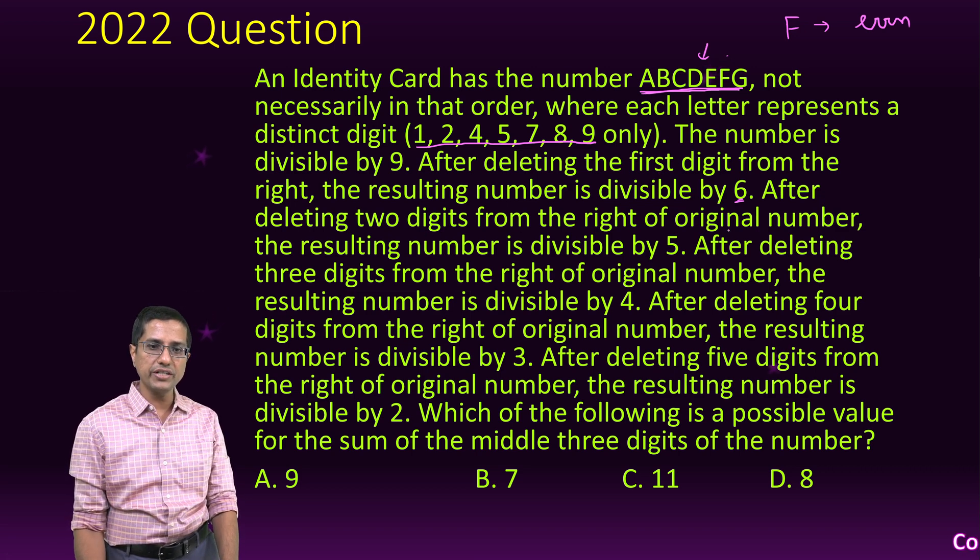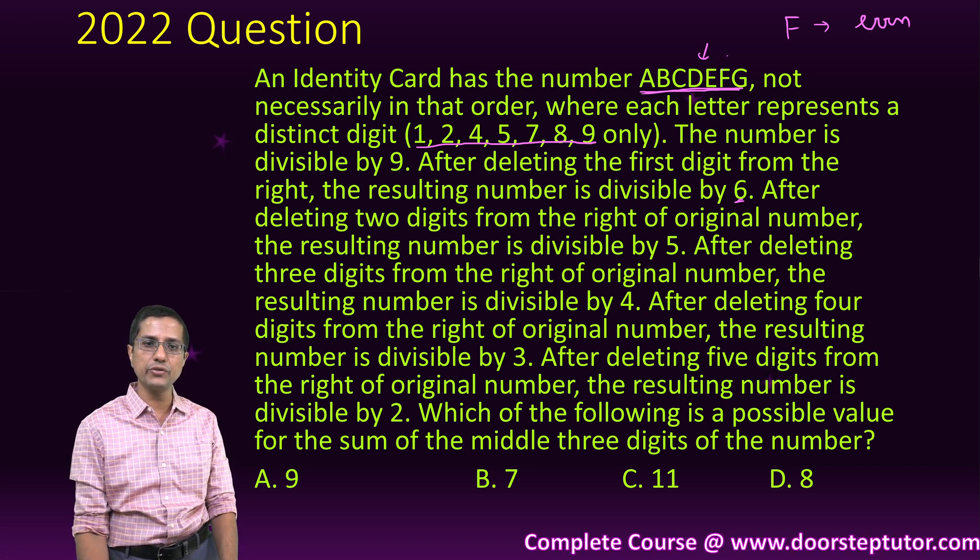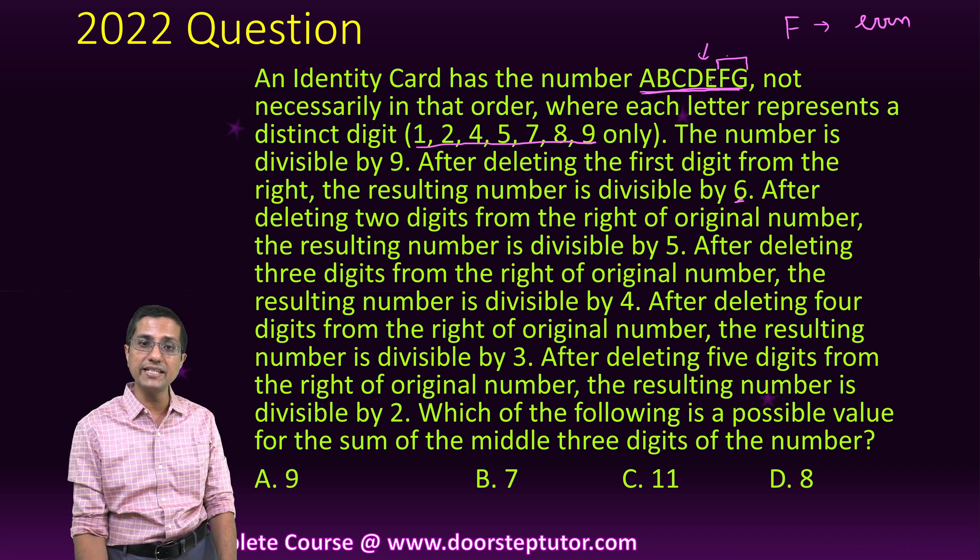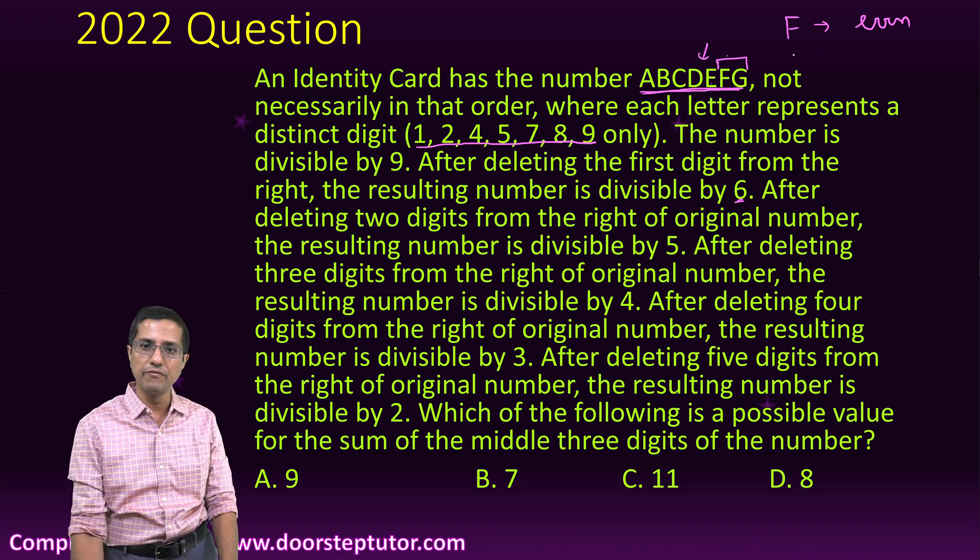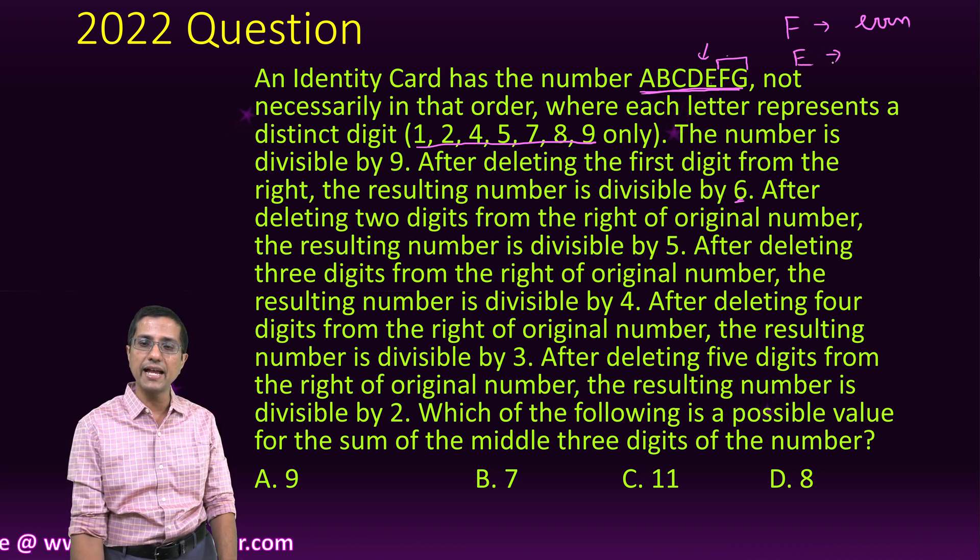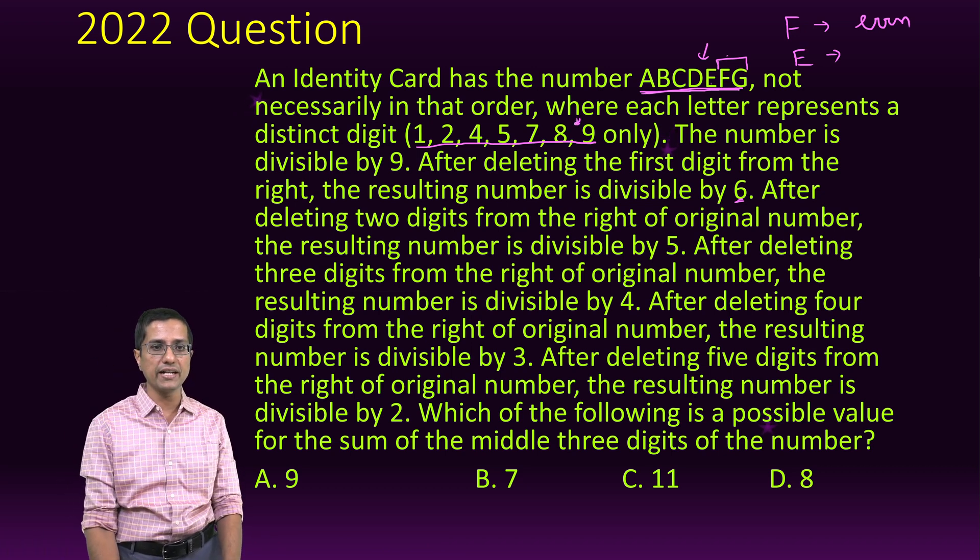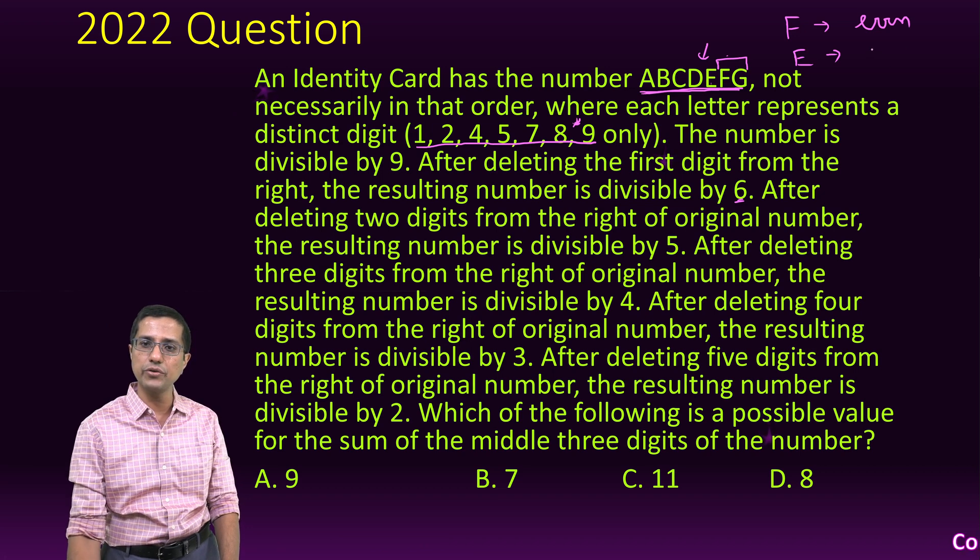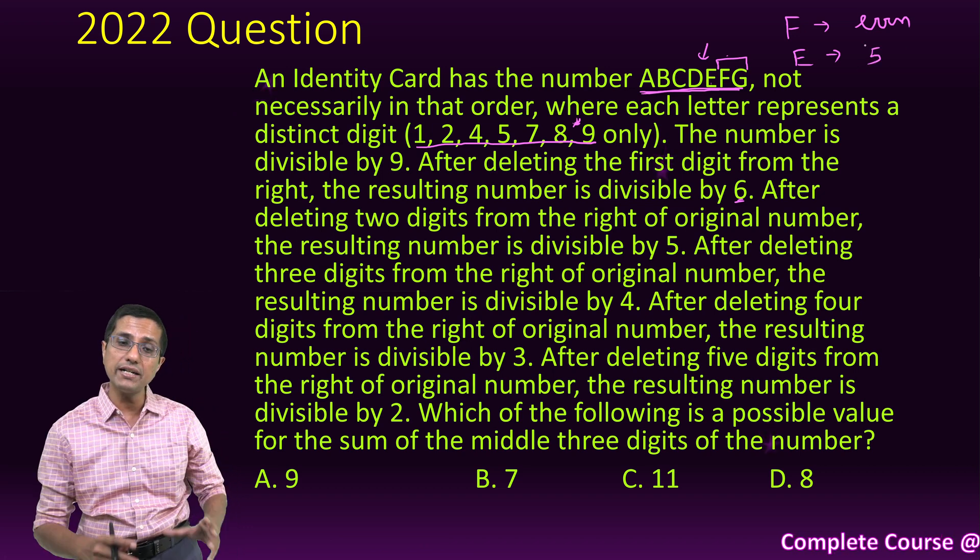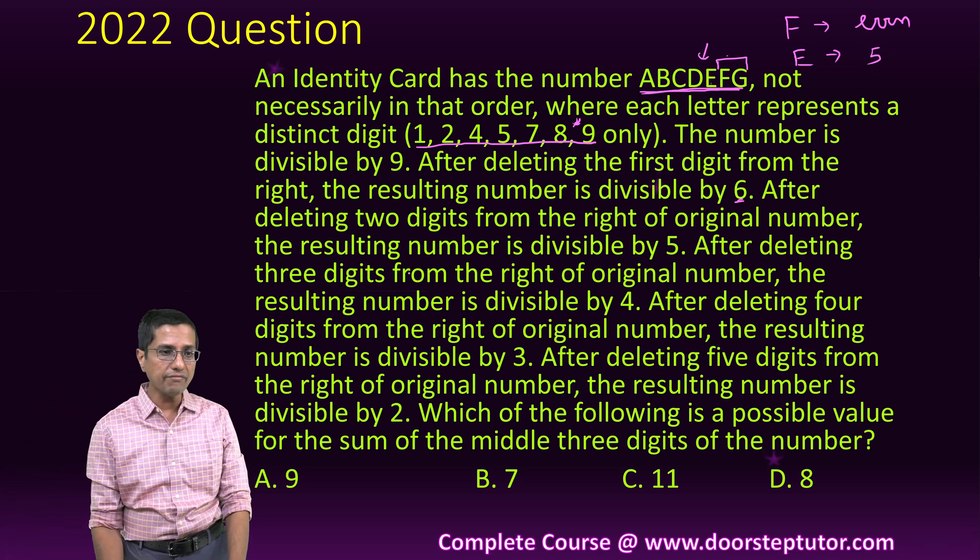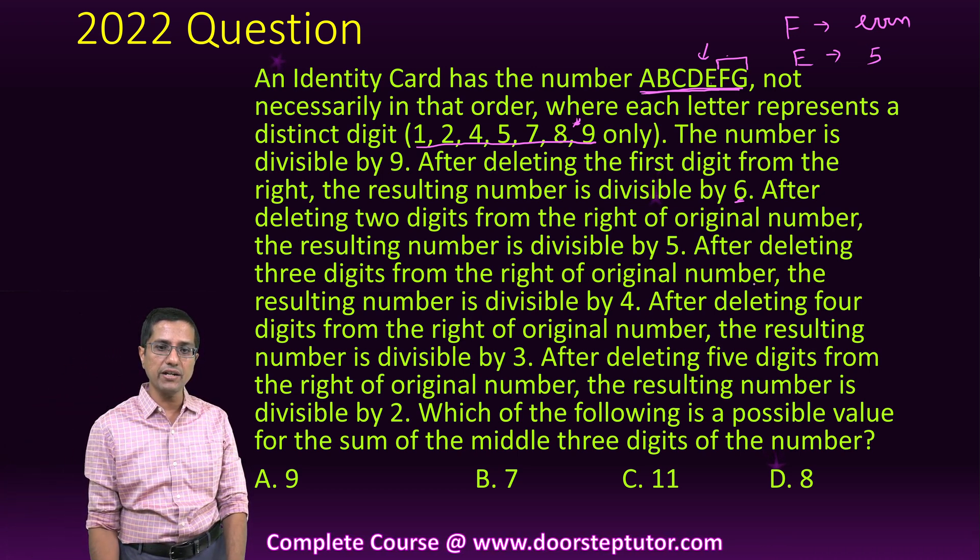After deleting two digits from the right of the original number, the resulting number is divisible by 5. So if I delete these two digits, then the number which ends in E is divisible by 5, which means that E has to be either 0 or 5. Of course, 0 is not given here, it cannot be one of the digits. So E has to be 5. So right by looking and reading the equation, we can find so much information.